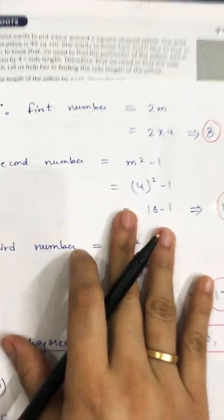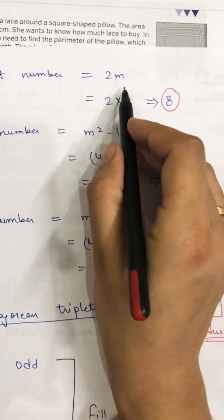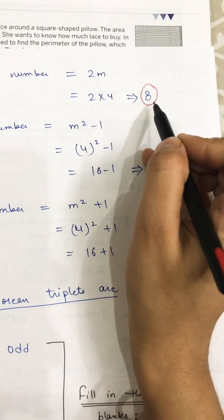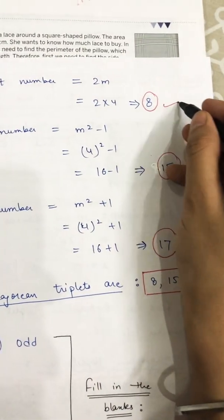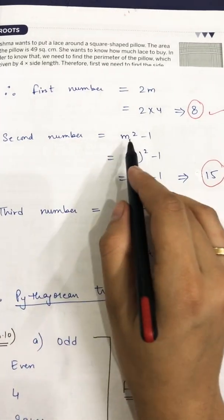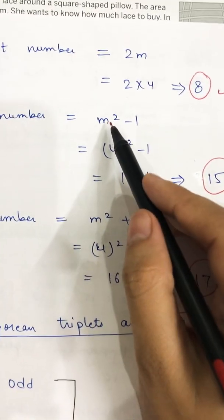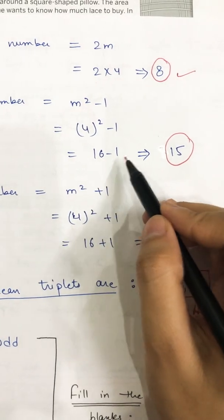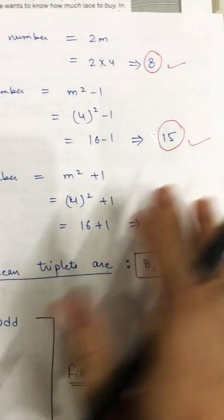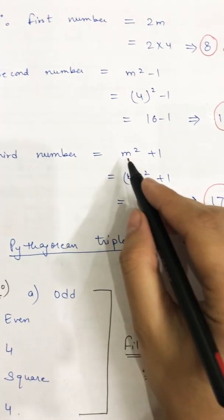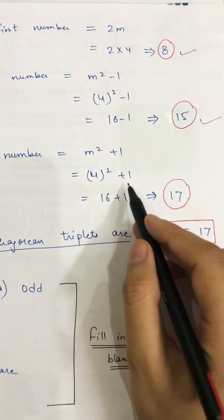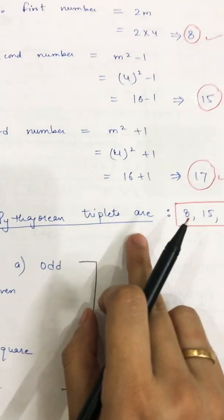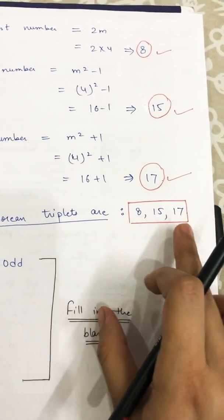Now put m = 4 into all three terms. First: 2m = 2 × 4 = 8. Second: m²−1 = 4²−1 = 16−1 = 15. Third: m²+1 = 4²+1 = 16+1 = 17. Therefore the Pythagorean triplet is (8, 15, 17).